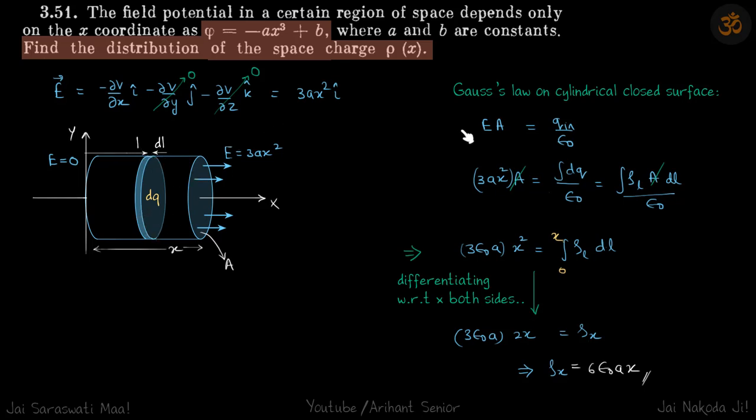And on the lateral surface, of course, E·dS is going to be zero because electric field is towards x direction and area vector will be perpendicular to it. So to calculate q_in, we will go to a distance l.